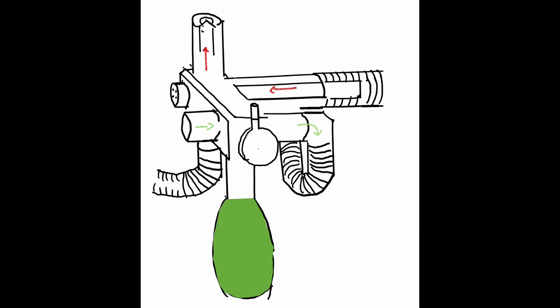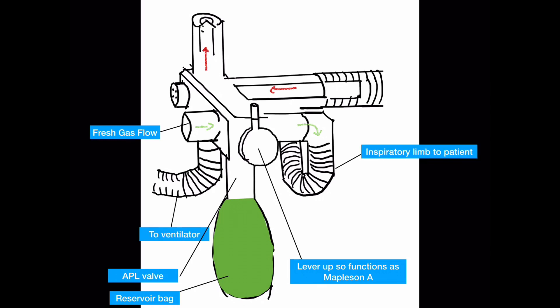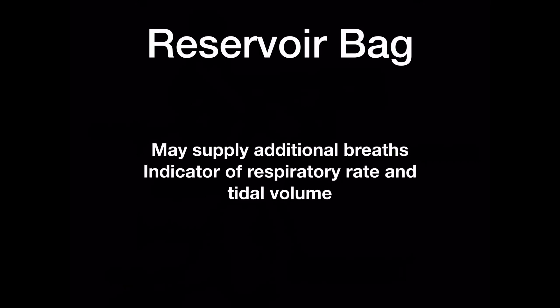Schematic and mechanism of action. With the lever in the up position, the reservoir bag and APL valve are connected in the same configuration as a Mapleson A circuit and the patient is able to breathe spontaneously. Fresh gas passes through the fresh gas port and is delivered to the patient via the inspiratory limb. During its passage, some of the fresh gas flow will fill the reservoir bag, which can be used by the anaesthetist to supply additional breaths and also acts as a crude indicator of the patient's respiratory rate and tidal volume.